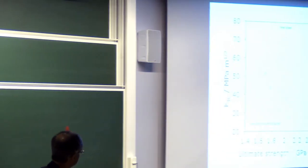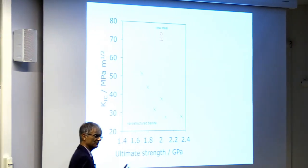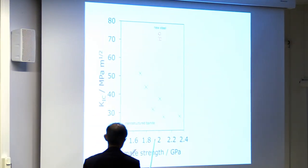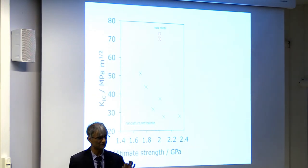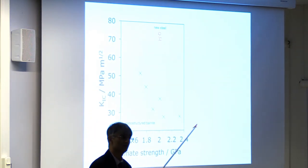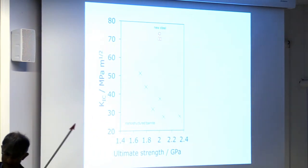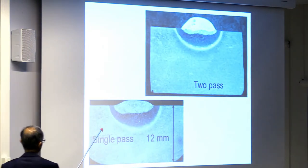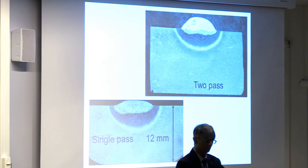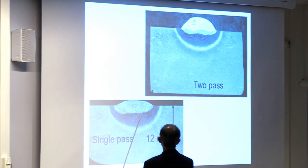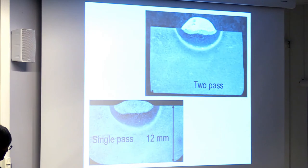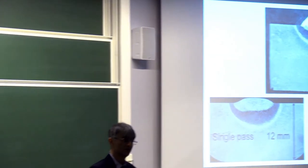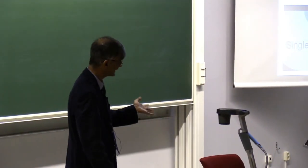The nanostructured bainite achieves very high strength and reasonable toughness, but with this martensitic material we consistently get a toughness of 75 MPa√m with strength greater than 2 gigapascals, mass produced and also weldable. Phase transformation theory isn't just about basic science — you should use it in order to produce something interesting, and you can.